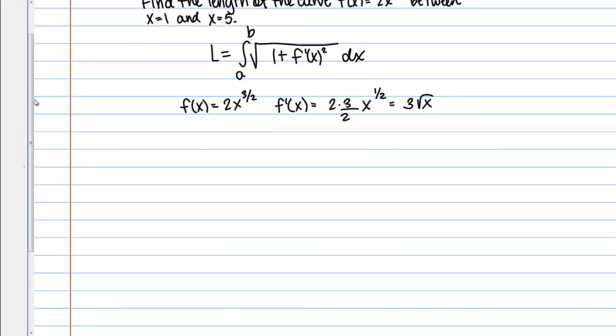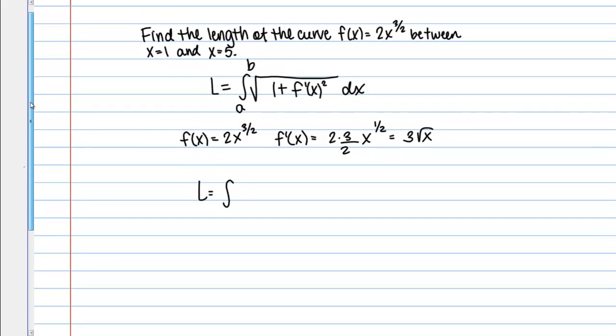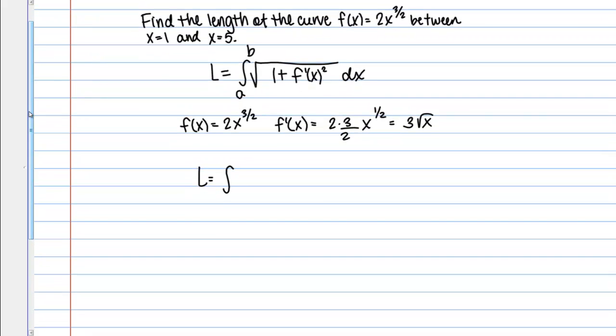From here we can go ahead and plug into our integral. Our bounds are given to us explicitly in the problem. We're told we want to find the length of the curve between x equals 1 and x equals 5. Then I've got the square root of 1 plus f prime of x, which I just found, so the quantity 3 square root of x squared. Then I'm integrating with respect to x.